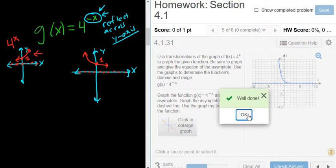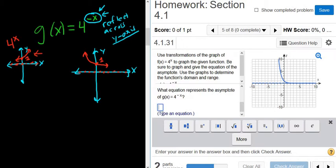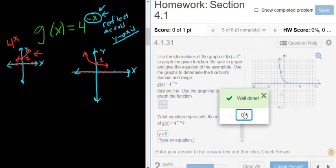Check answer. Okay. Good. What equation represents the asymptote? Okay. That's going to be y equals zero. So y equals zero. That's always y equals when it's horizontal.